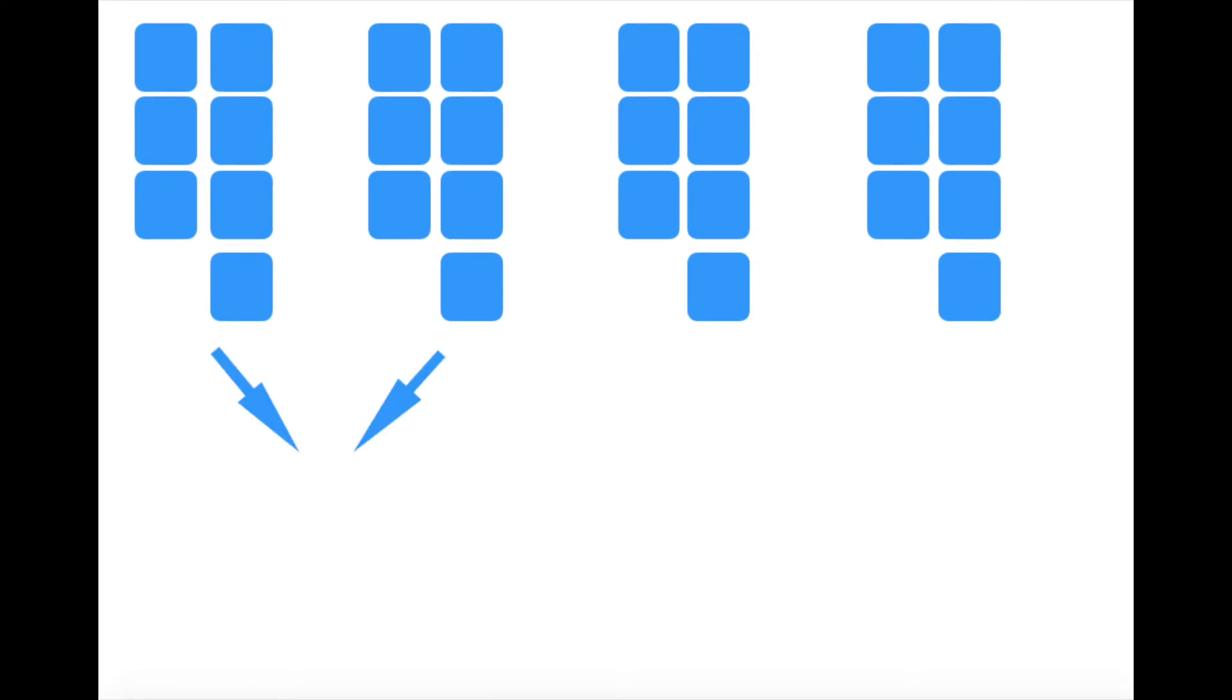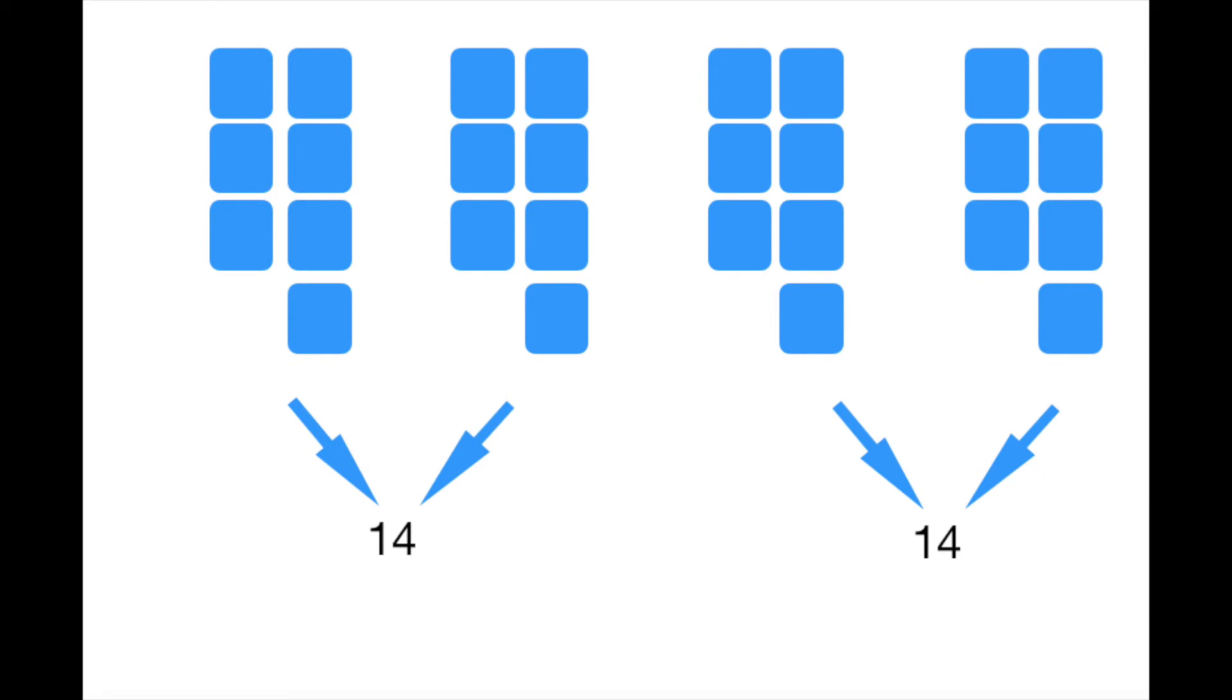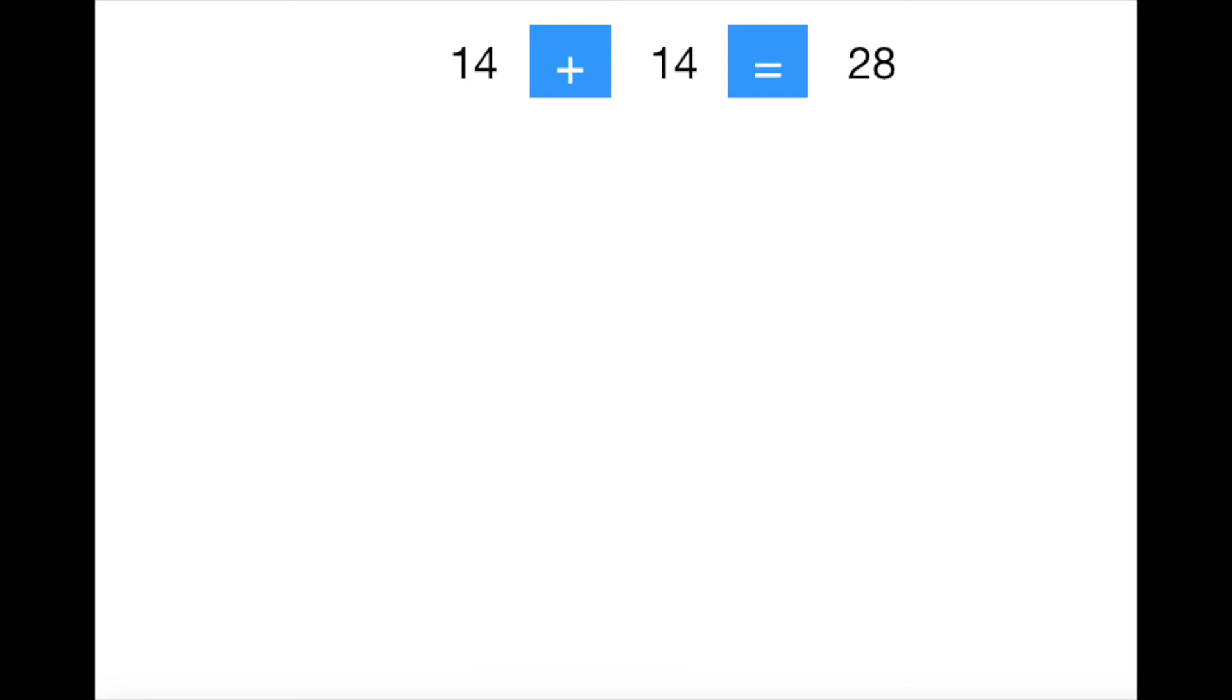If children are not confident with their times tables, they might solve this problem using their addition skills. They might be able to do seven plus seven is 14, and then another seven plus seven is 14. Then they could add the 14 and 14 together to get 28.